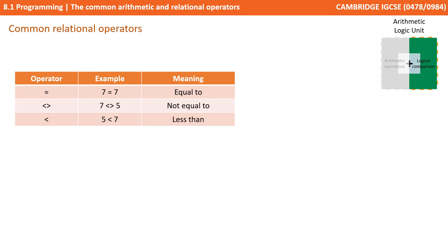Next, we have less than, as in 5 is less than 7. Next, we have less than or equal to, as in 5 is less than or equal to 5.